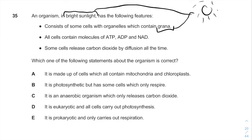All cells contain molecules of ATP, ADP and NAD. It's way too broad to know exactly which type of cell it is just from the fact it has ATP, ADP and NAD, which are pretty common in cells.